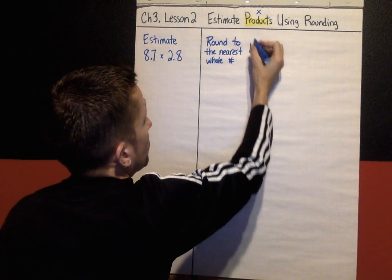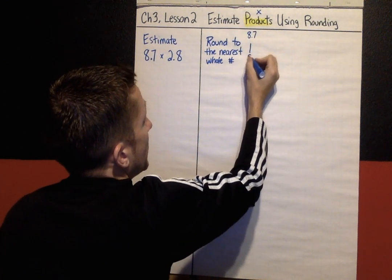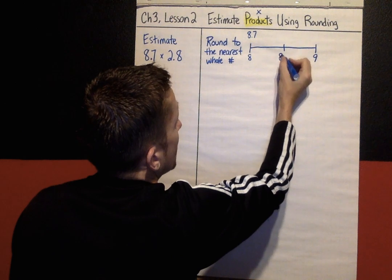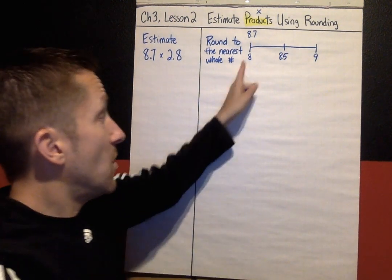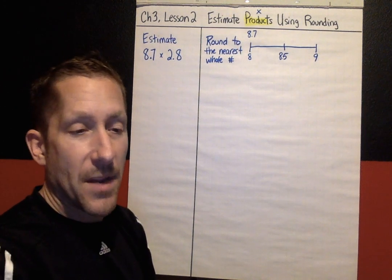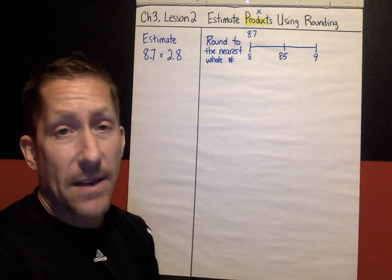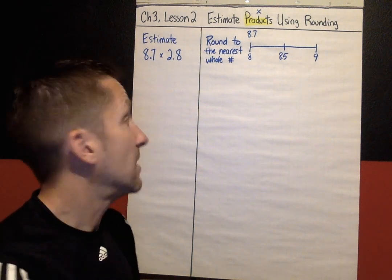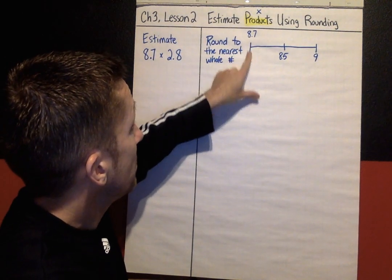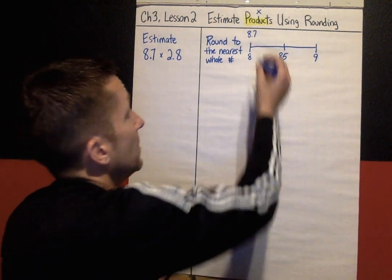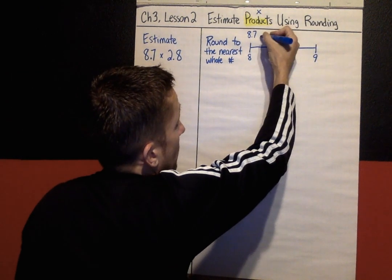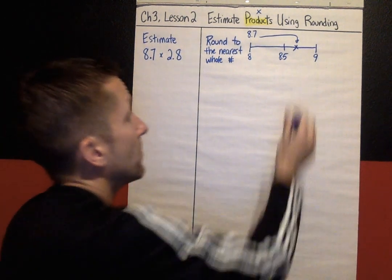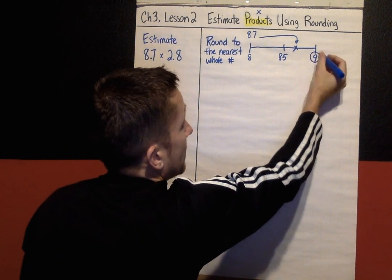So 8.7 — I know that it's between 8 and 9, and right in the middle would be 8.5. You don't have to create the number lines when you're doing today's practice, but I'm putting it in the notes as a visual of what you could be thinking when you're rounding. So 8.7, it's between 8 and 9 with 8.5 right in the middle, so 8.7 is about right there. If I'm rounding to the nearest whole number, I'm going to round to 9 — it's closer to 9.